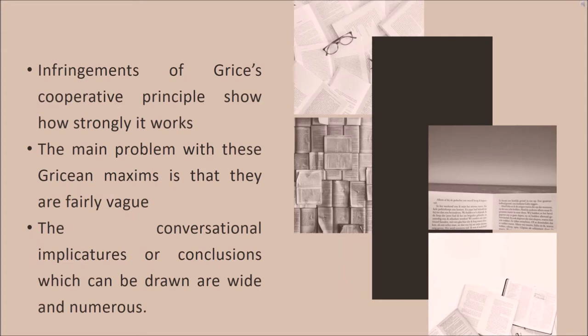The cooperative principle seems like common sense, but interestingly, people often break it. Infringements of Grice's cooperative principle show how strongly it works, because the listener assumes that a superficially uncooperative answer is in fact a cooperative one. The main problem with these Gricean maxims is that they are fairly vague, and the conversational implicatures, or conclusions which can be drawn, are wide and numerous. Some recent work has attempted to specify how humans manage to disentangle what is relevant from the mass of possible inferences they could make.